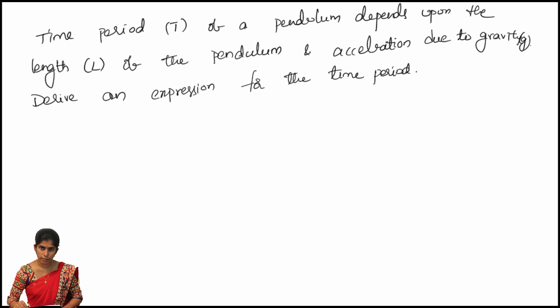In this problem, the time period T of a pendulum depends upon some other terms, which means time period T is a dependent variable. Time period T depends upon length L and acceleration due to gravity G. So here we have 3 variables only: time period T, length L, and acceleration due to gravity G. Total number of variables is 3.